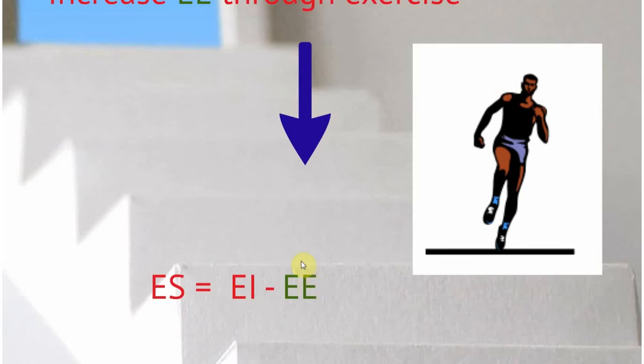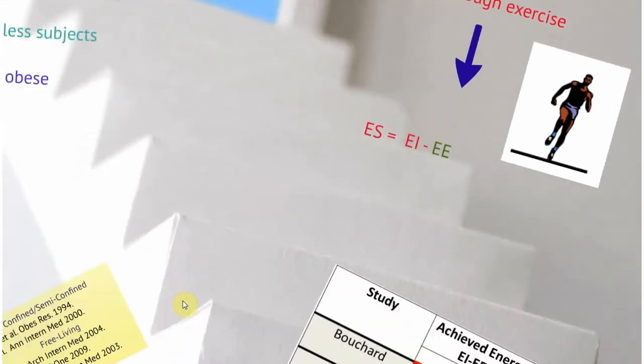I looked at the hypothesis through a different lens. Let's suppose that someone increases energy expenditure through exercise. Then EE should theoretically go up, and this EI minus EE should be negative as long as EI stays the same and all the other components of EE stay relatively stable. Theoretically, someone should actually lose weight under an exercise intervention.